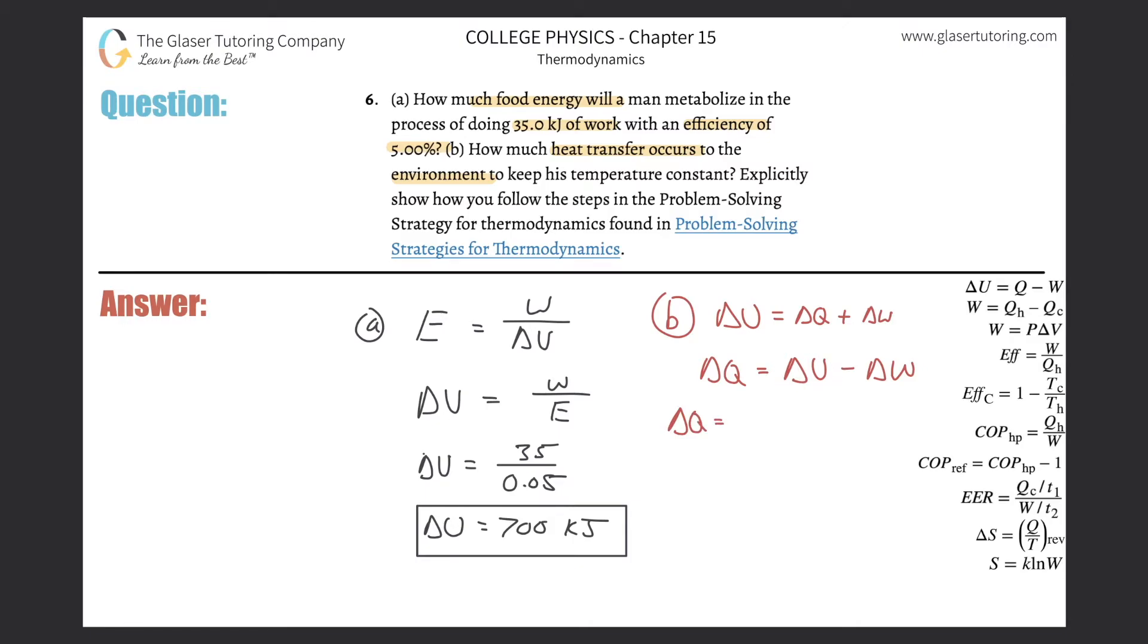The change in heat energy will be equal to the change in internal energy we just found, at 700. Actually, is that value positive or negative? This work should technically be a negative value. Whenever work is being done by a system, it's negative. Check out number two for that. So this answer is negative. When I plug this in, it's going to be negative 700. The person lost 700 kilojoules of energy. Then that's going to be minus the change in work energy. The person is doing 35 kilojoules, so it's going to be negative 35 kilojoules, because the work is being done by that system.